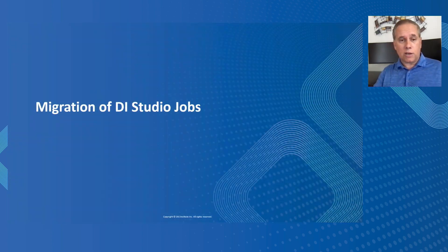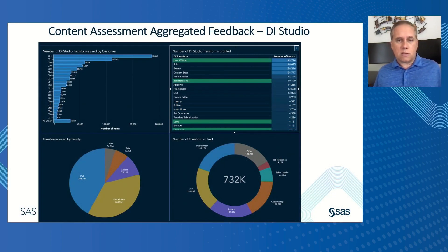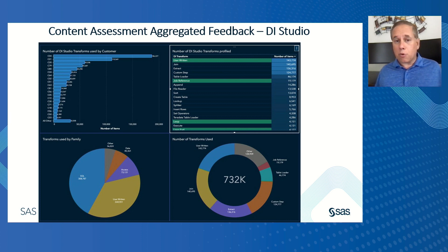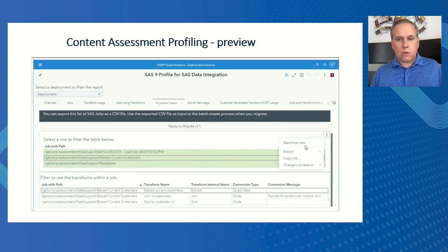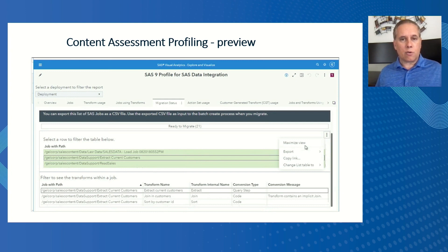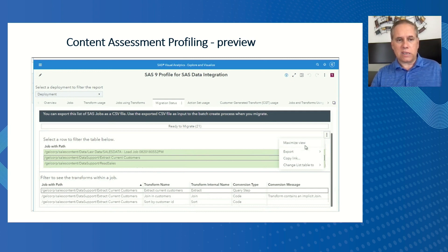Switching gears a little, DI Studio jobs have a very similar process. This chart is based on feedback that customers have shared with us — the types of transformations used in DI Studio jobs. We're focused on this lower right quadrant: we see a lot of user-written joins and extracts, and we're making sure the best migration experience occurs with those. Just about everything will migrate, but we want to make sure the richest maintenance experience will show up for the things customers have used most frequently. When looking at DI Studio, we find all the DI Studio jobs you have, flag those most ready to migrate in terms of the richest user experience, show what transforms are being used, and help you get across those. There's excellent documentation in the Content Assessment download that talks through how all these pieces fit together.